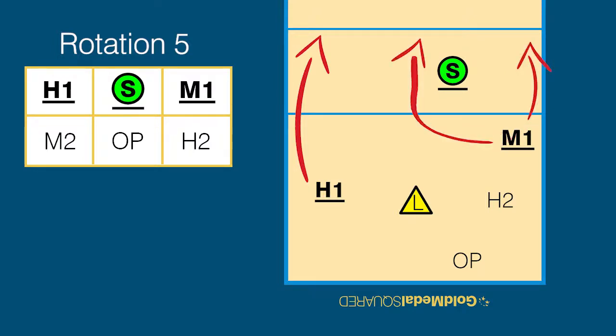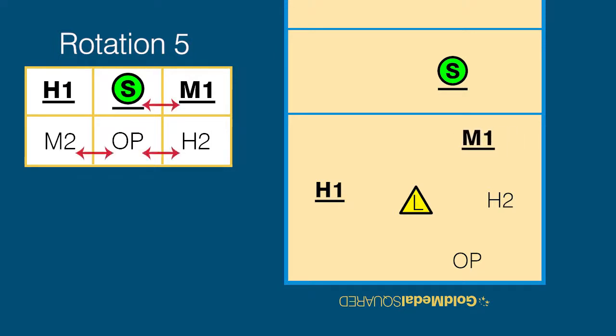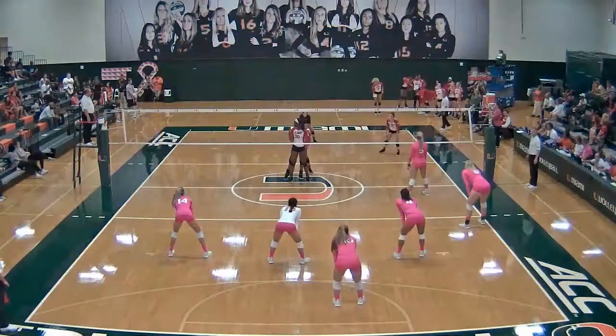The libero passes in zone 6 and the H2 passes in zone 1. There aren't many overlap rules to worry about here. The M1 must stay to the right of the setter, and the opposite back at the end line must be between the libero and the H2. Lastly, the H1 must be in front of the libero. Here's how it looks.